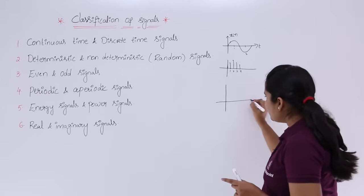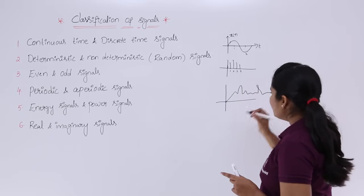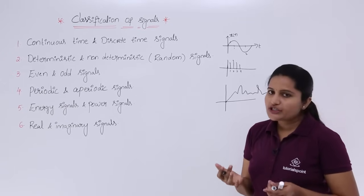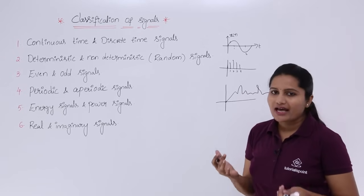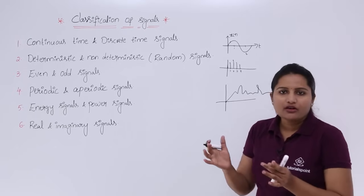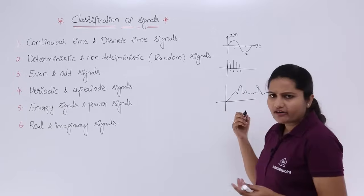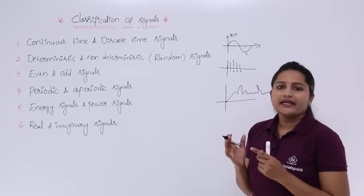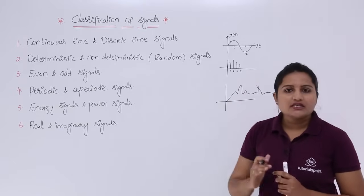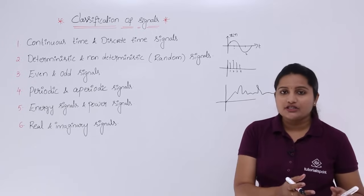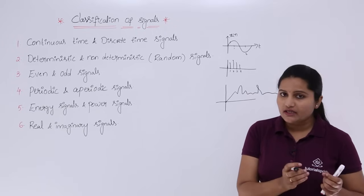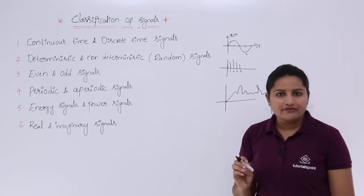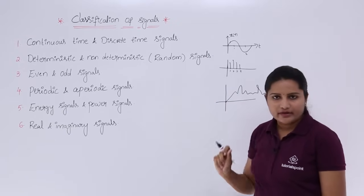If you have a signal like this — a time-varying physical phenomenon intended to convey information but with no proper mathematical relation between its components — it is not a ramp, not a sine wave, not a DC signal. This is said to be a random signal, that is a non-deterministic signal. We cannot determine it using any particular mathematical relation. This is the simple difference between deterministic and non-deterministic signals.